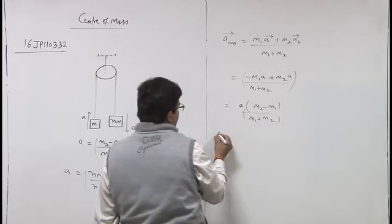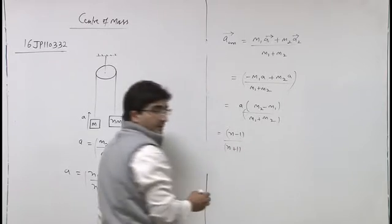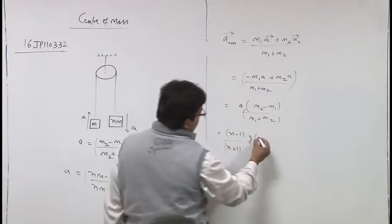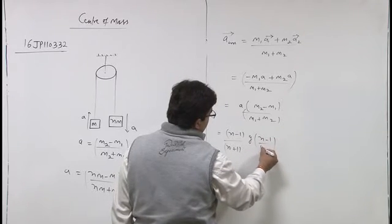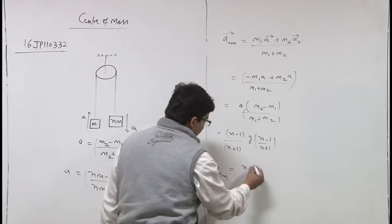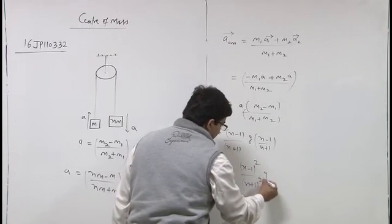m2 is taken as nm. So a equals n minus 1 upon n plus 1 into g and m2 minus m1, so nm minus m. So n minus 1 upon n plus 1. So it comes out a_cm equals n minus 1 whole square upon n plus 1 whole square into g.